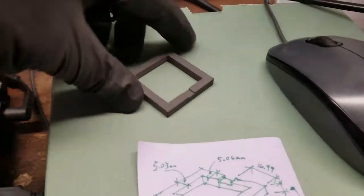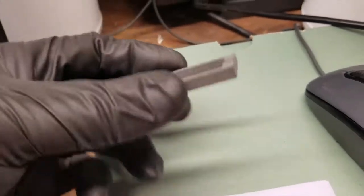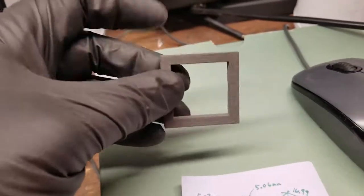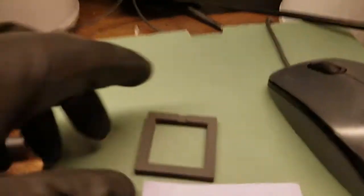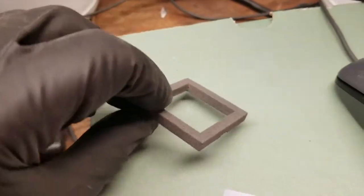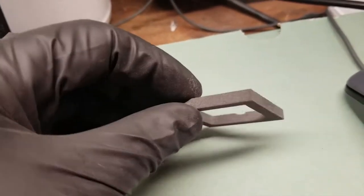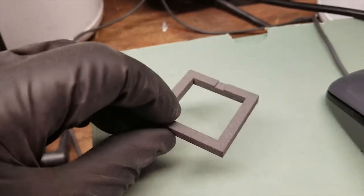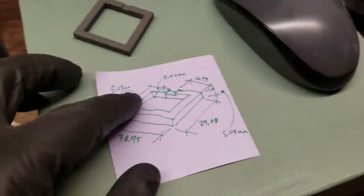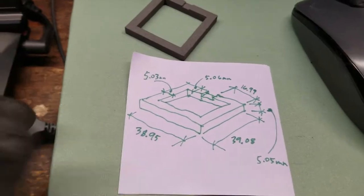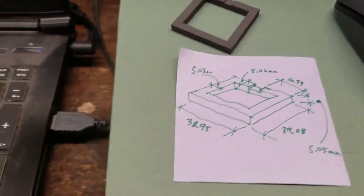So I pulled out my test print. This is what Sintratec has for their calibration. Use a calipers or some sort of device that can measure down to hundreds of an inch. And here's my little drawing of it. Now I keep this handy just in case I ever need to recalibrate, that way I have the numbers.